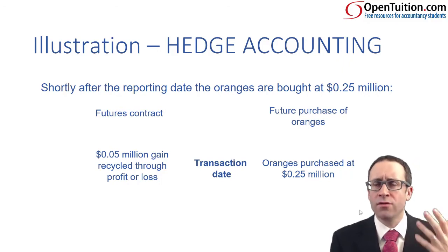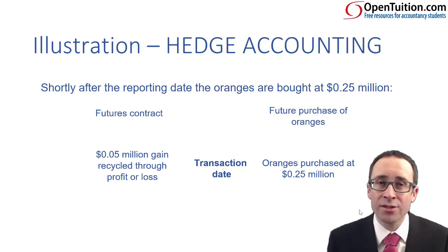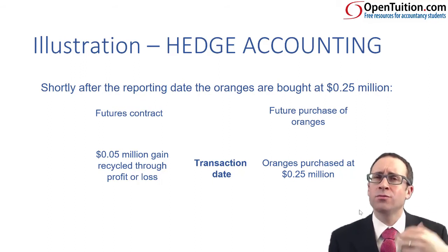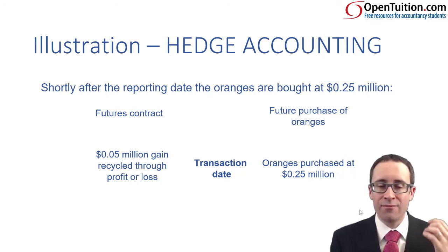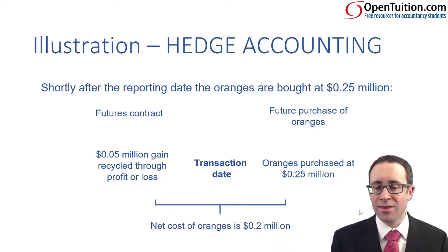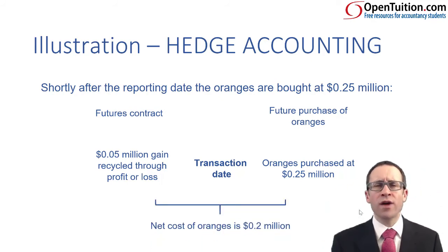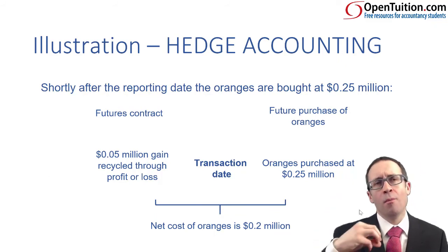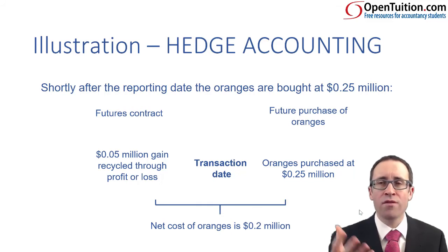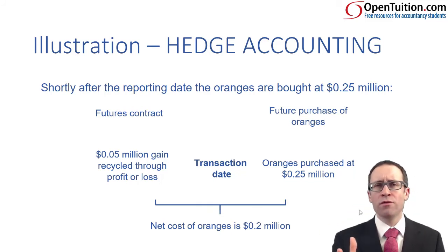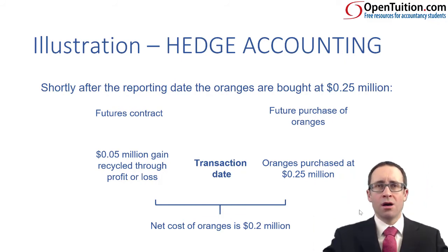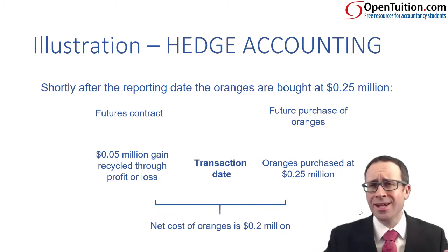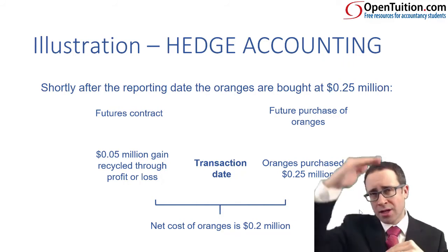But magic — we've made a gain when we close out our futures contract. We placed a bet on the value of the oranges rising, they have risen, we were right. We get some cash in when we make that gain. That gain of $0.05 million is then recycled through profit or loss. We record a purchase of $0.25 million — that's what we pay — but we net off that gain of $0.05 million against the $0.25 million purchase price, giving a net cost of $0.2 million. We have reduced the risk and eliminated it entirely.